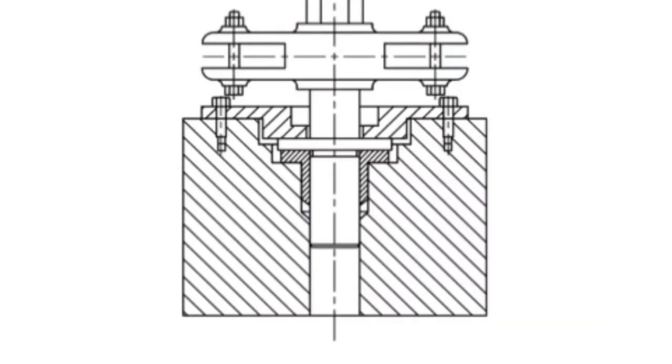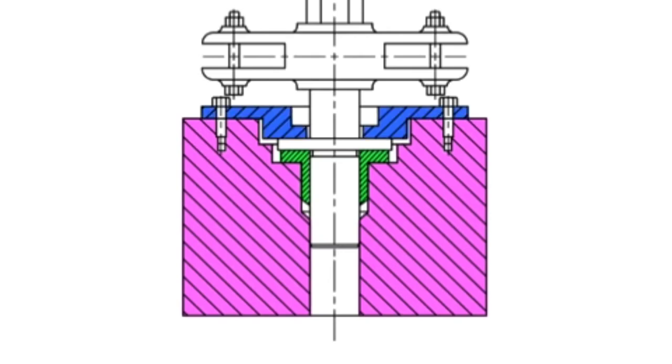Section lines are typically used when showing details of a part where using hidden lines would be confusing. Section lines illustrate where material would be if the part were sectioned or cut, as if with a saw. Different patterns or direction of lines indicate different sections of the object.